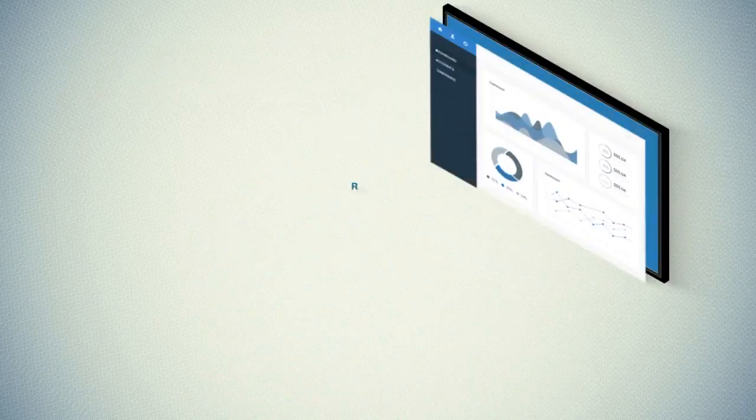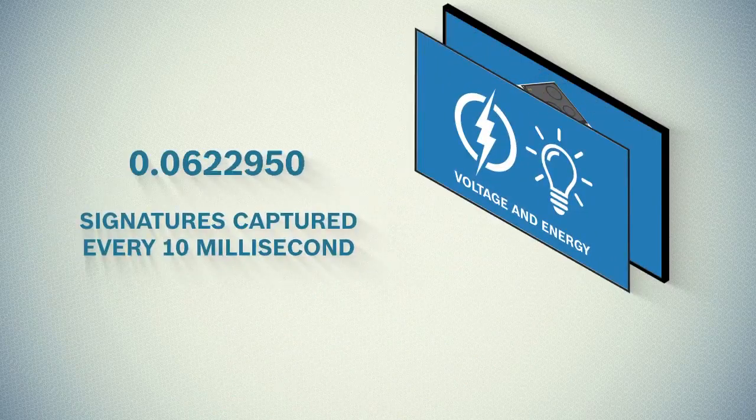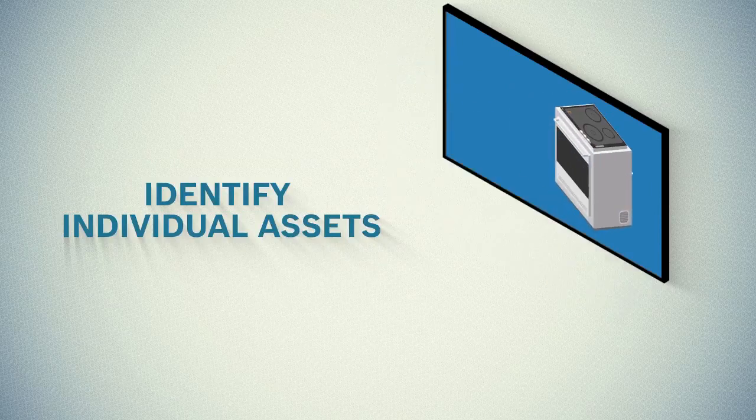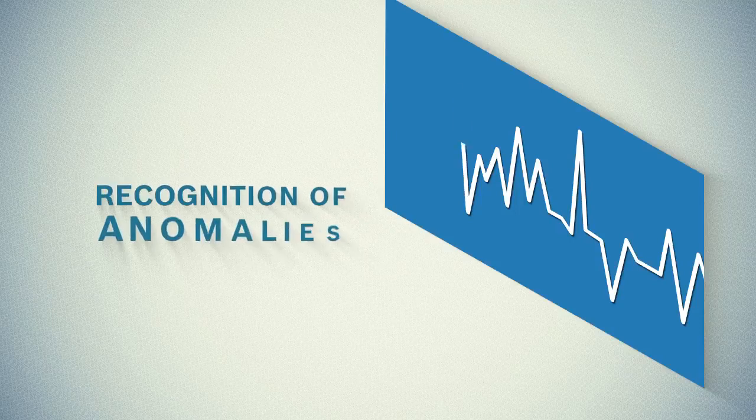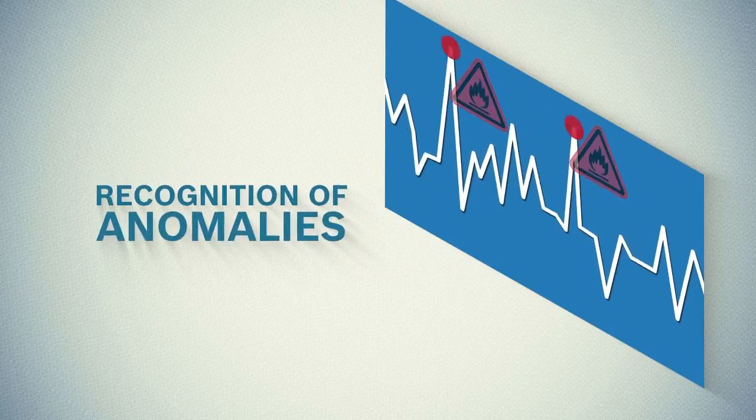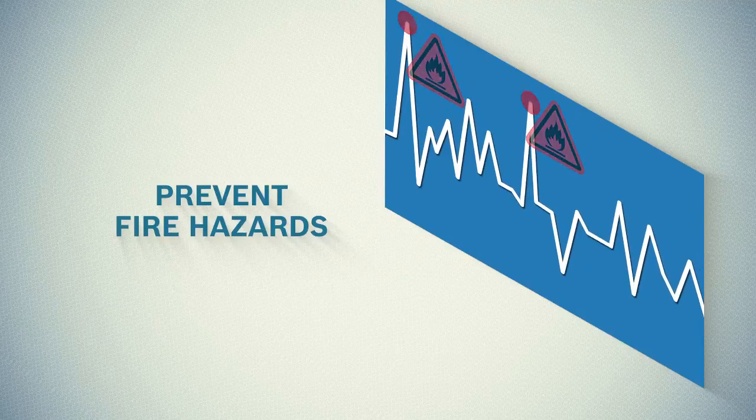The algorithm captures voltage and power signatures every 10 milliseconds to identify the individual assets used, study patterns in consumption, and ensure safety through recognition of anomalies like preventing a fire hazard through detection of unusual fluctuations.